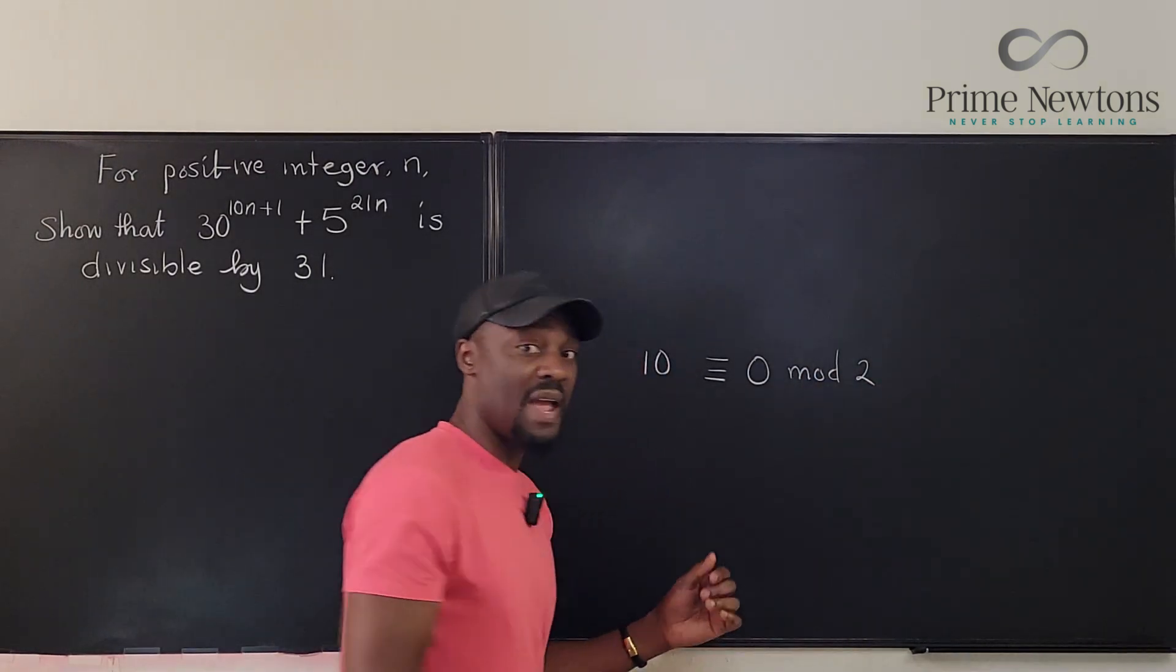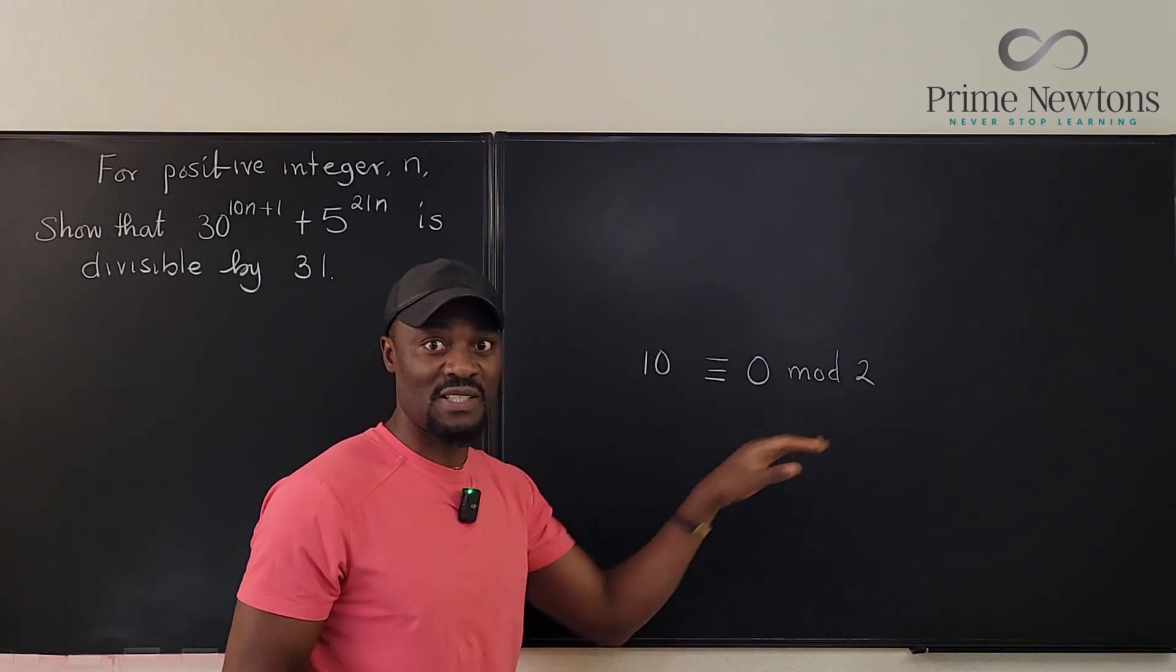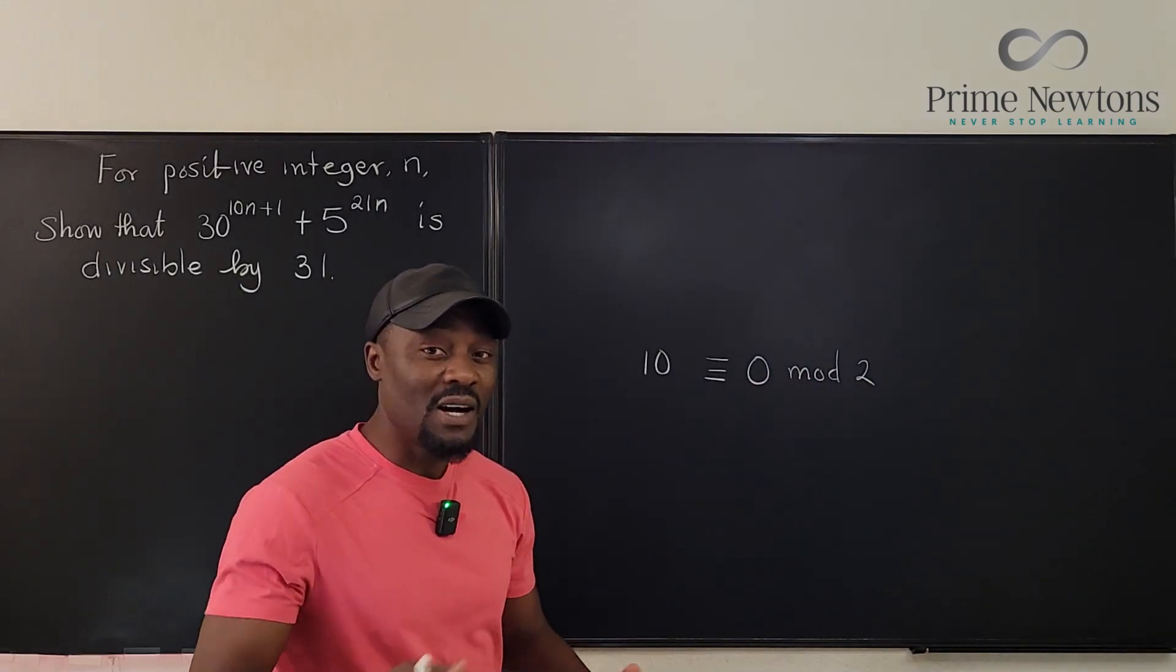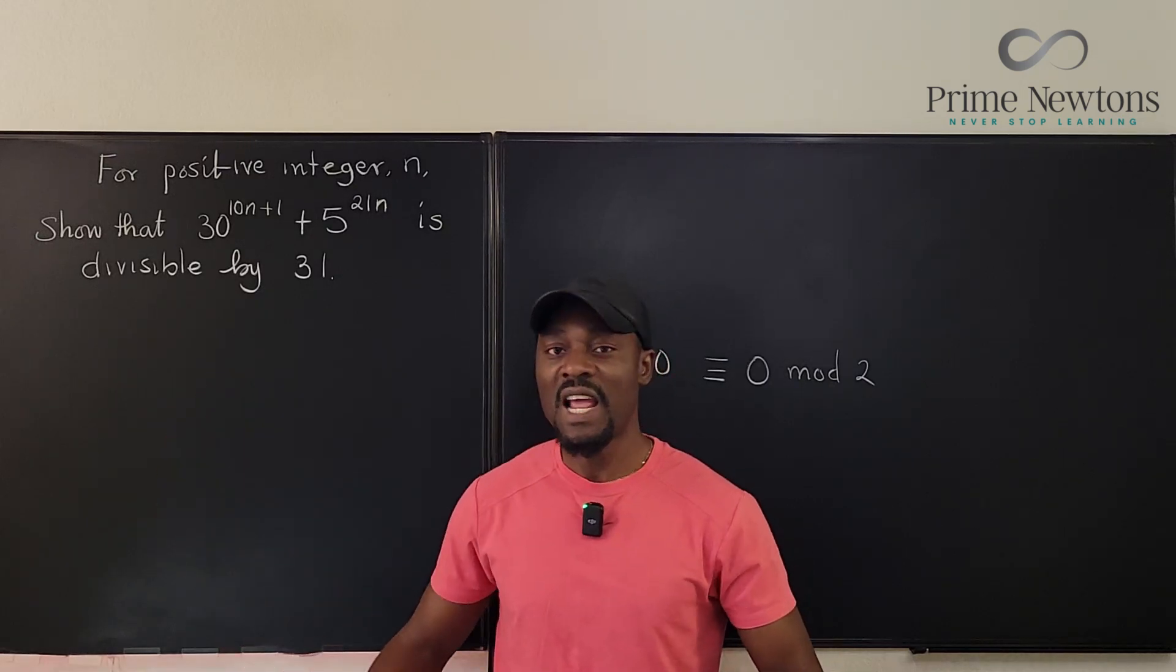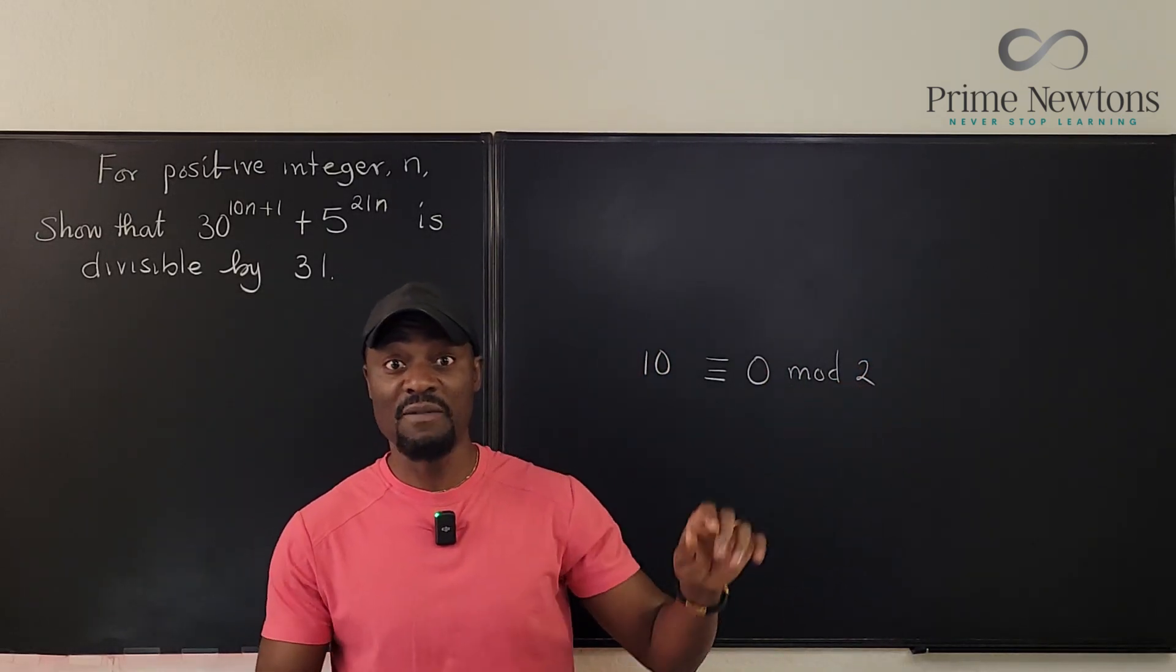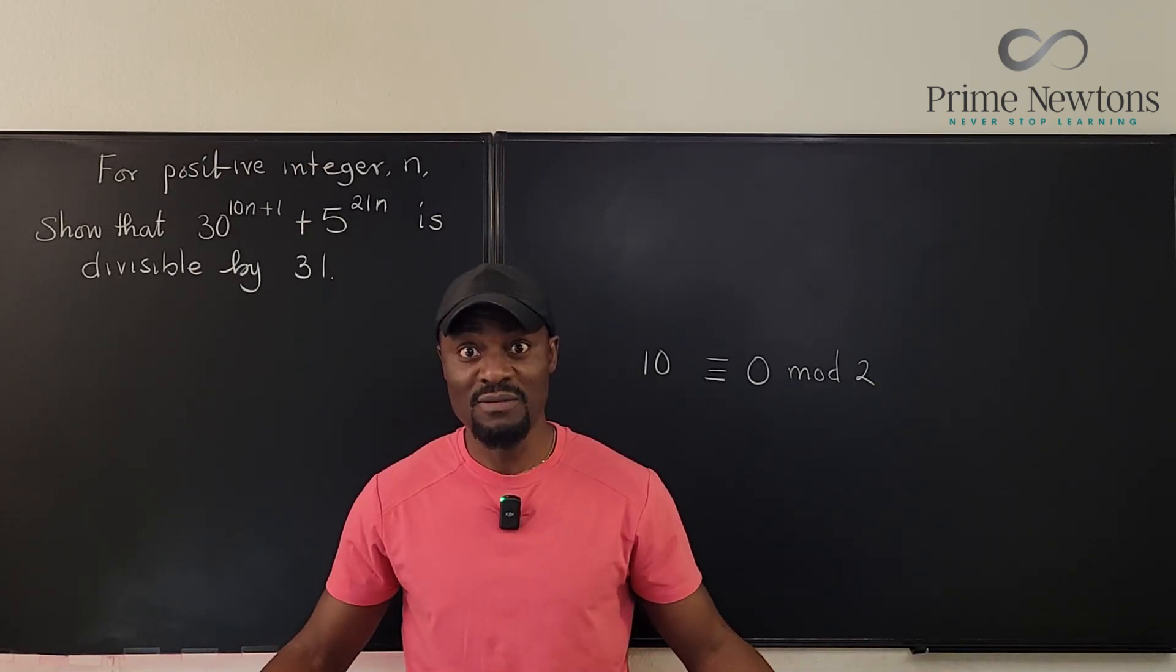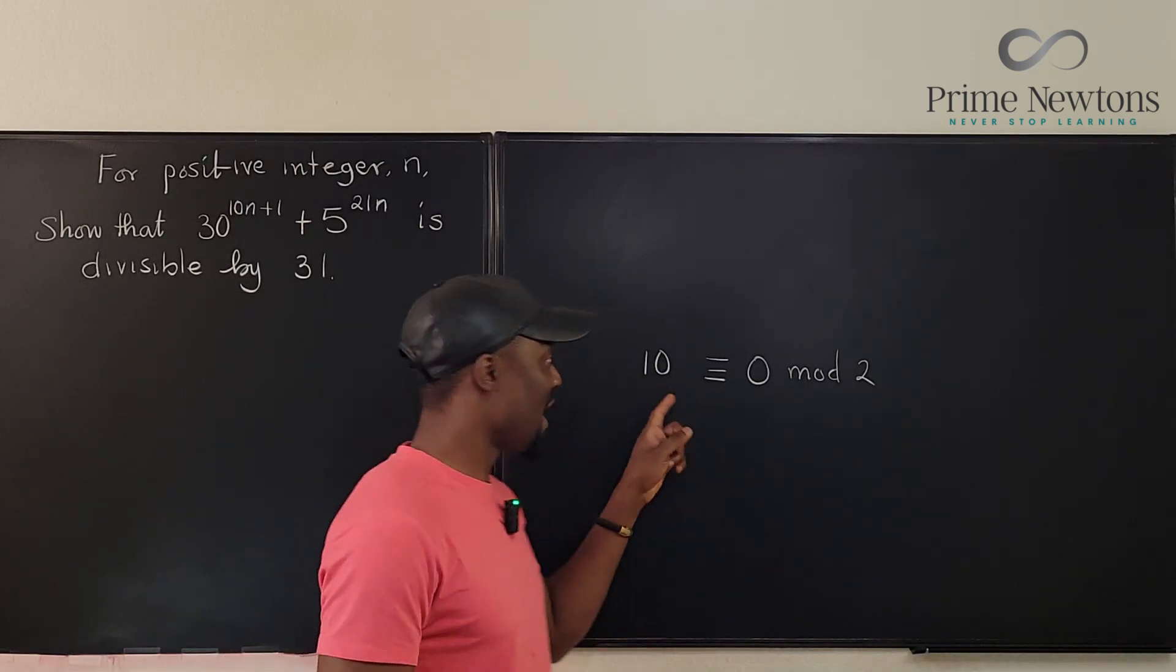It means the remainder is going to be zero when divided by two. That's the meaning of the sentence. Because divisibility problems is just telling you that we can tell that a number is divisible by another number if it is zero mod the other number. So you just want it to get zero. If you want to get zero, that's what you say.